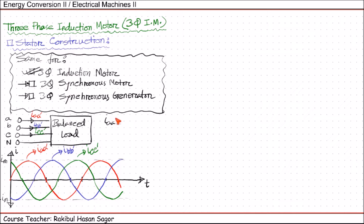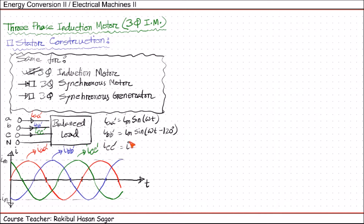The equations for these three currents can be expressed as: IAA' = IM sine(ωt). IBB' is lagging 120 degrees behind IAA', so IBB' = IM sine(ωt − 120°). ICC' is lagging 120 degrees behind IBB', so ICC' = IM sine(ωt − 240°).